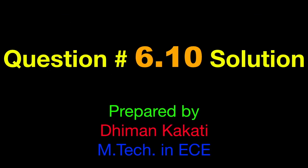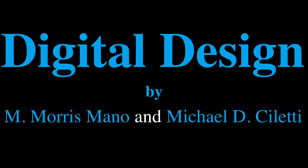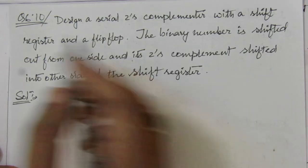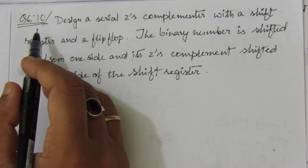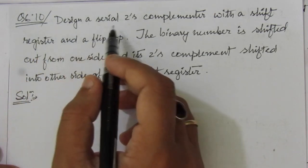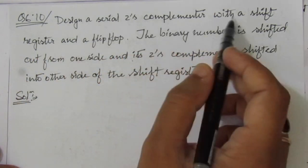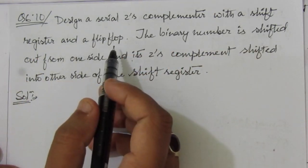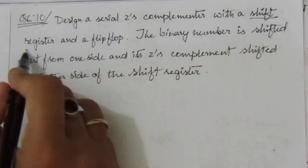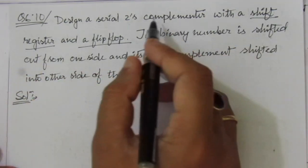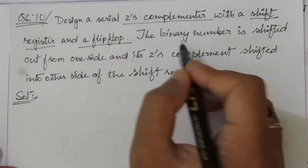Dear students, I welcome you all to this problem solution series in digital electronics. I am solving problems from the textbook 'Digital Design' by Morris Mano and Michael Ciletti. In this video I am solving problem number 6.10 from chapter 6. The problem is: design a serial two's complementer with a shift register and a flip-flop.